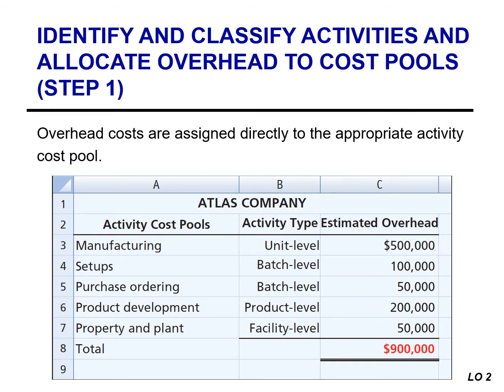Activity-based costing starts with an analysis of the activities needed to manufacture a product or perform a service. This analysis identifies the resource-consuming activities. Atlas Company identified five activity cost pools: Manufacturing, Setups, Purchase Ordering, Product Development, and Property and Plant.